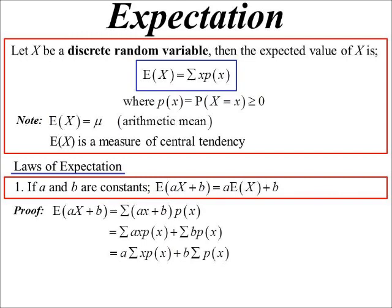And then that proves what we want, because b times the sum of the probabilities—well, the sum of the probabilities is always equal to one, so that just becomes b. And the sum of x times the probabilities—well, that's what we define to be the expected value of X. So there's a proof of that particular relationship.